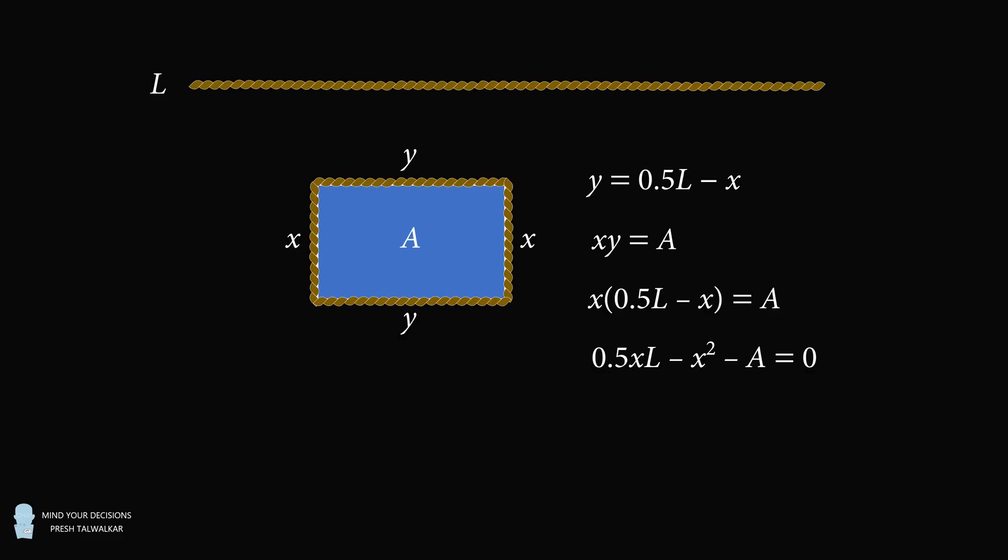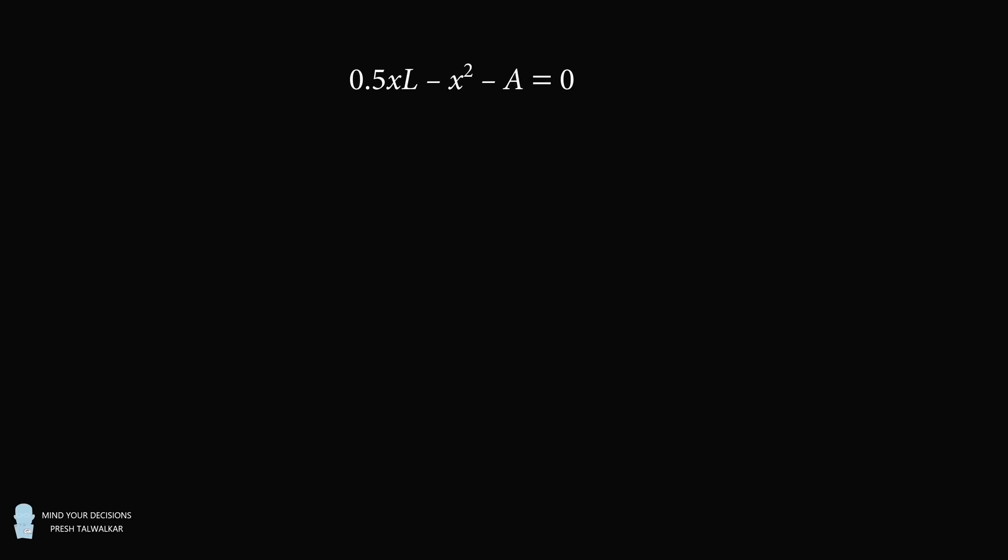So let's focus on this equation. We'll multiply both sides of the equation by negative 2 to give the quadratic equation 2X squared minus XL plus 2A is equal to 0.